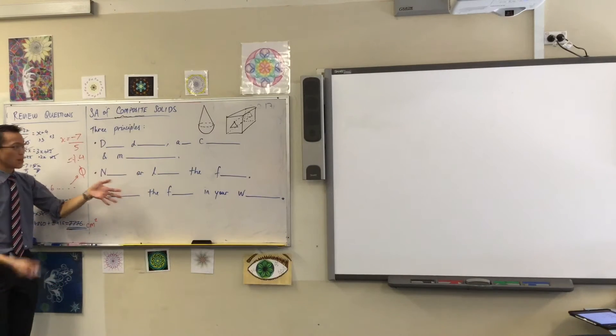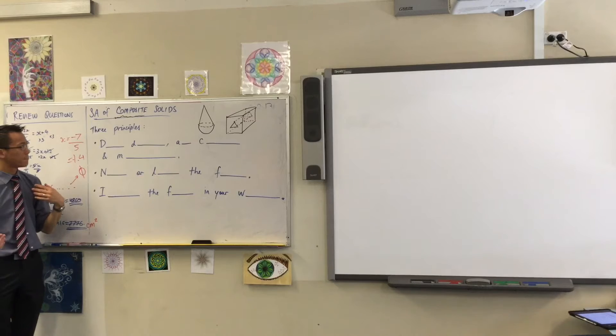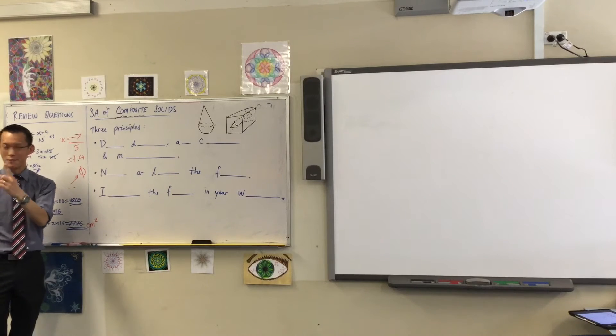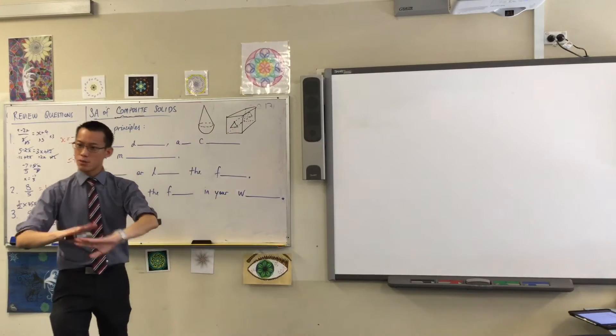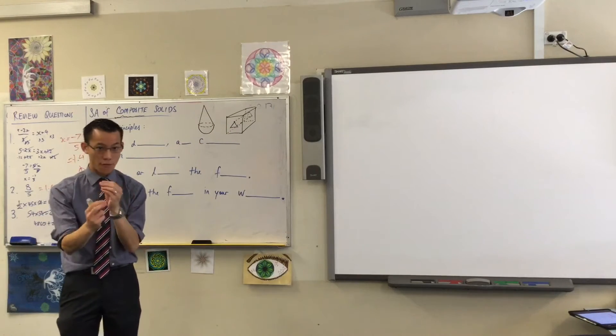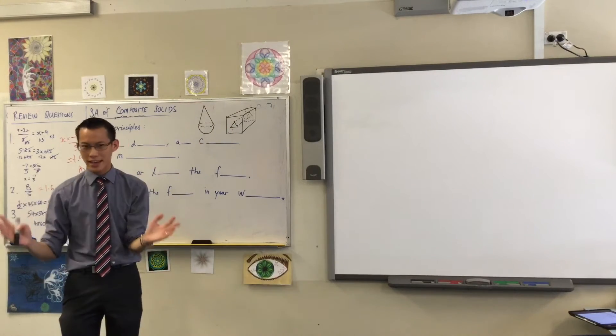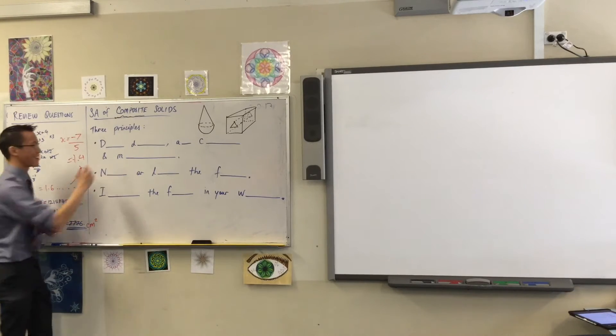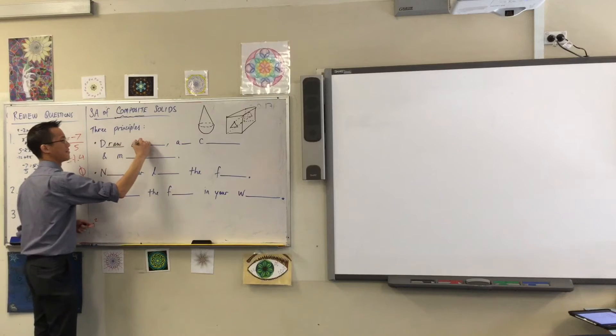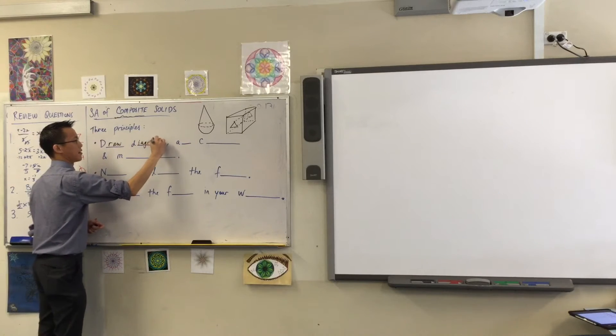So here are my three principles, and they kind of overlap with things you've already done. Number one, you're dealing with shapes, right? And there are pictures. You might be provided with a picture, you might not, there might be a verbal description. Whatever the case is, the first thing you should always do is draw diagrams.